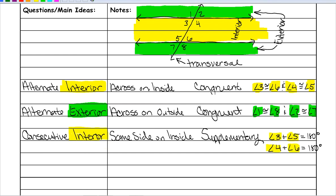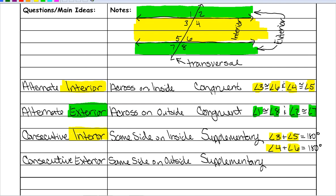The next set is called consecutive exterior angles. Consecutive is same side, exterior is outside. These are also supplementary. Examples are angles 1 and 7, and angles 2 and 8. Since they are all exterior angles, they will all be green angles.